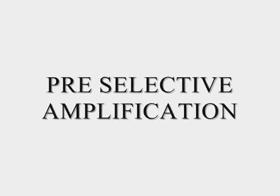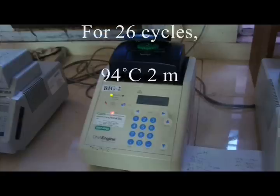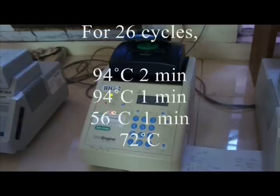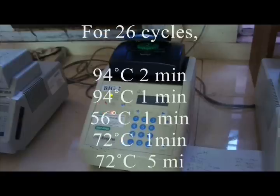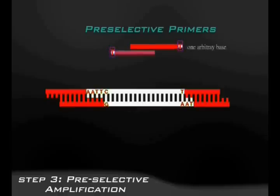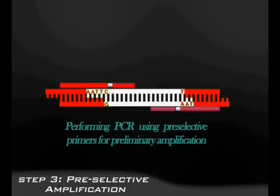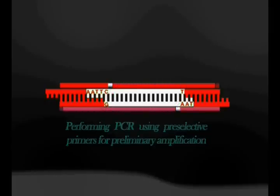Preselective amplification is the next process. In the PCR machine, for about 26 cycles, specific temperatures are maintained. Preselective primers are adapters with a supplementary base, which may be adenine, guanine, cytosine, or thymine. This enables the first selection, and after this step, one-fourth of the fragments are amplified.